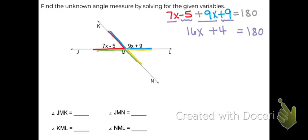Now that we've simplified, we can start moving things around. We want to isolate our variable. I'm going to undo what's added or subtracted to the variable first. So I'm going to move that plus 4 to the other side by doing the inverse, subtracting 4. Because 4 minus 4 is 0, so we're left with 16x equals 176.